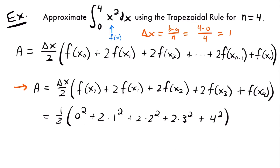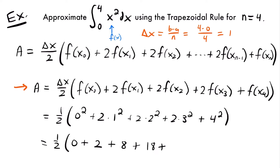Cleaning up, this equals 1 half times 0, plus 2 times 1 squared, which is 2 times 1, equal to 2. Then plus 2 times 2 squared: 4 times 2 is 8. Then plus 2 times 3 squared: 9 times 2 is 18. Then plus 4 squared, which is 16. Adding all these values, we have 1 half times 44, which equals 22.